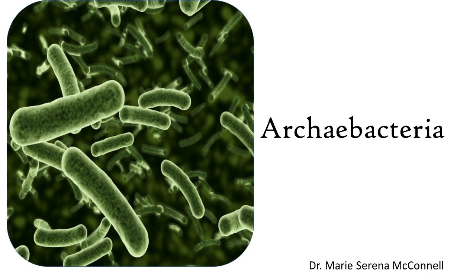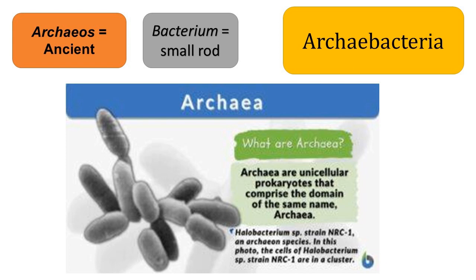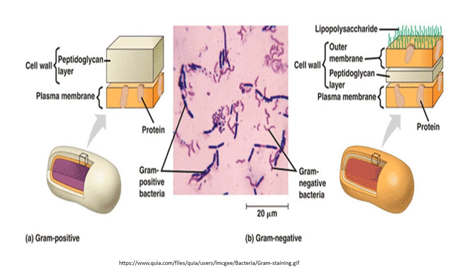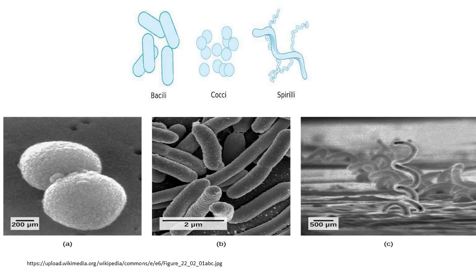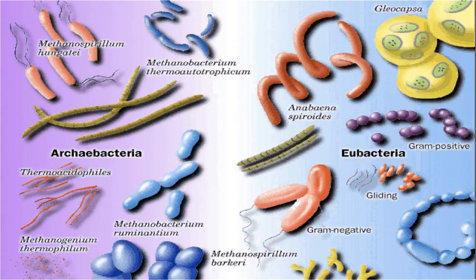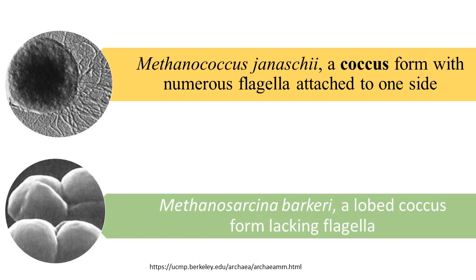The archaea or archaeobacteria are quite diverse both in morphology and physiology. The name comes from Greek: 'archaeos' meaning ancient and 'bacteria' meaning small rod. They can stain either gram-positive or gram-negative and may be spherical, rod-shaped, spiral, lobed, plate-shaped, irregular, or pleomorphic. Some are single cells whereas others form filaments or aggregates.